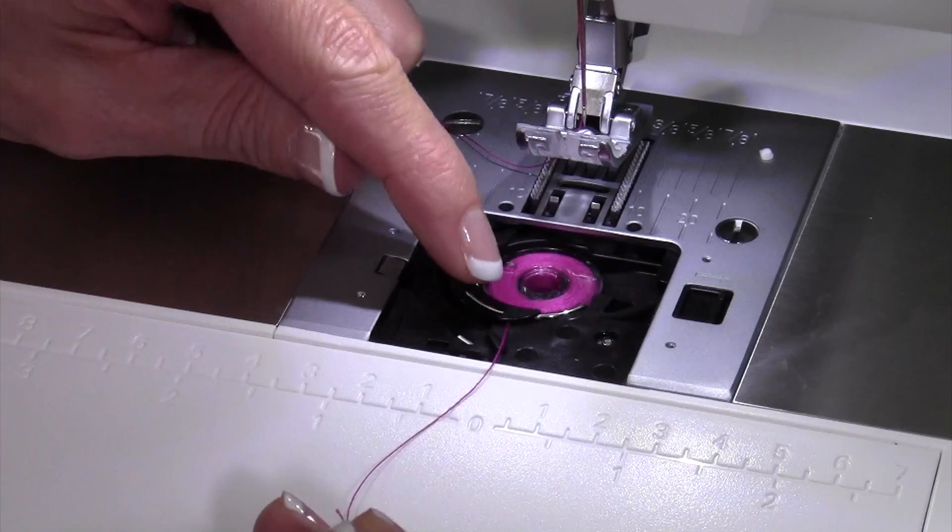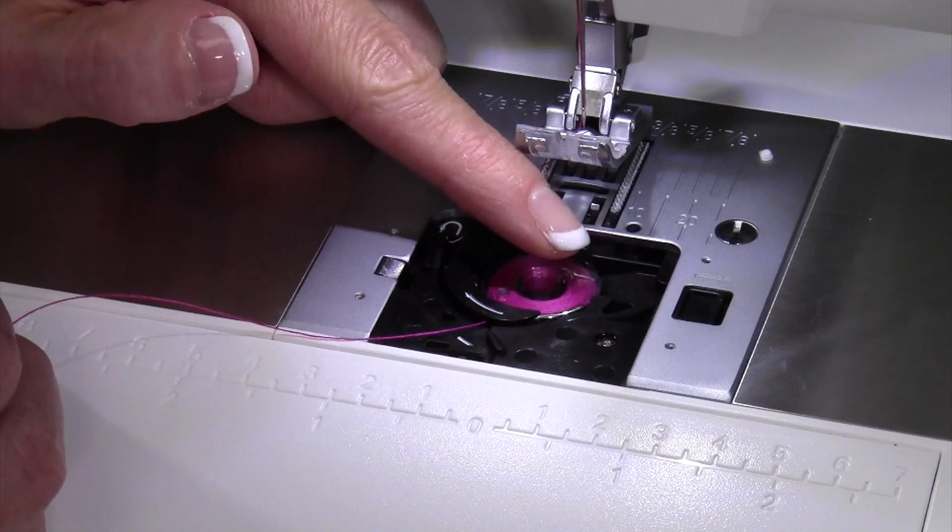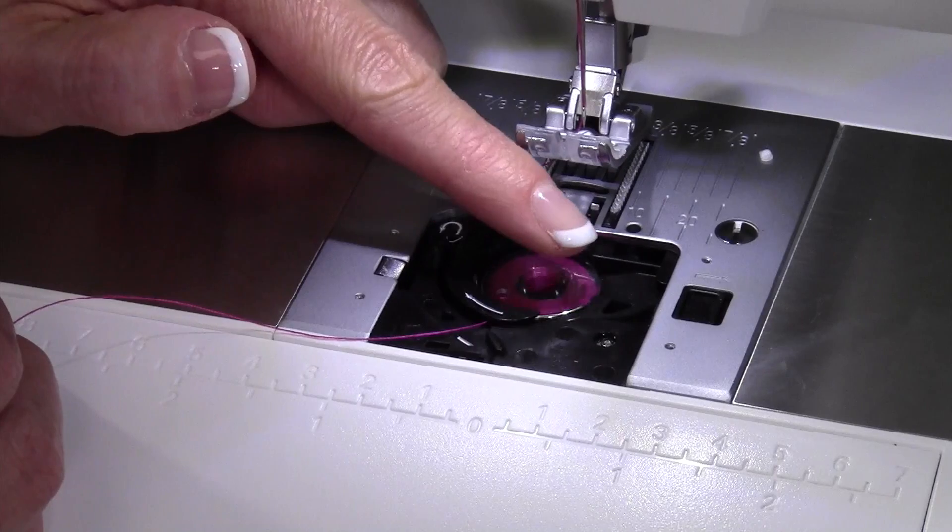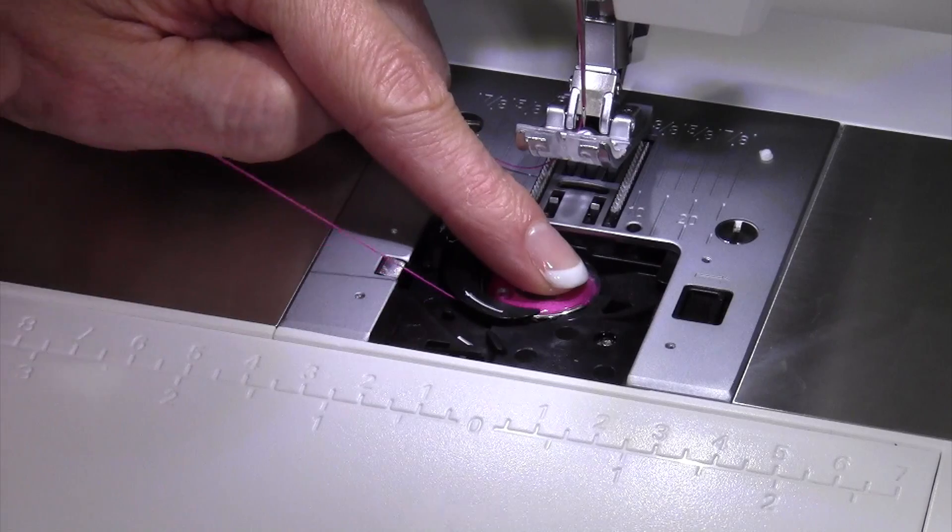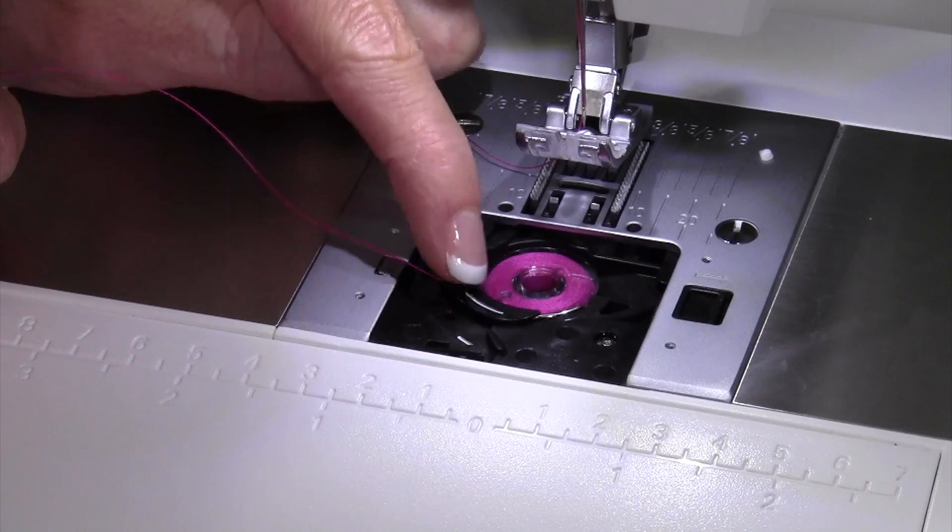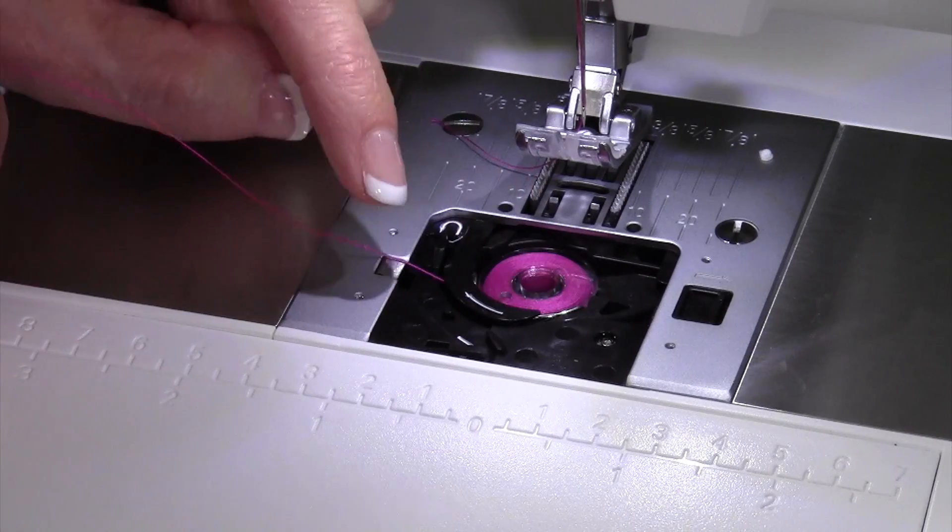Then follow the groove with the white arrow and just keep going. I do like to sometimes put my finger on the bobbin so it stops spinning, puts a little resistance because from here to there, there's a slight little click underneath. That's putting the thread in the bobbin tension area.